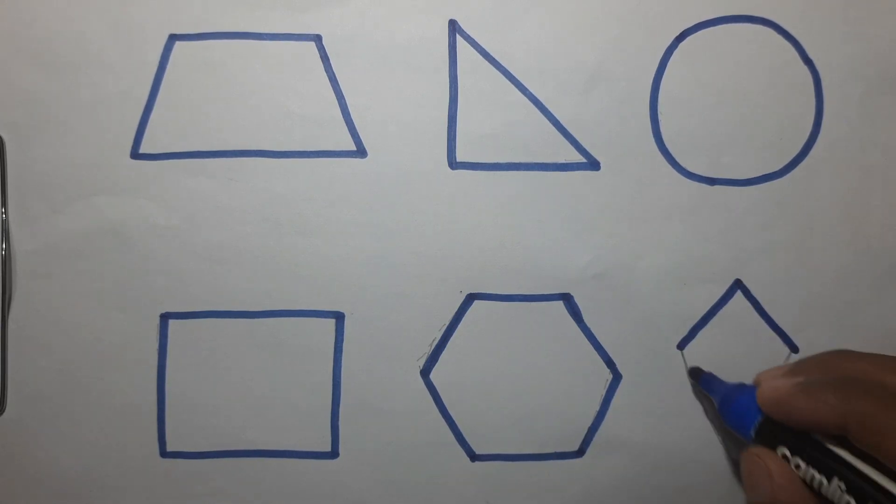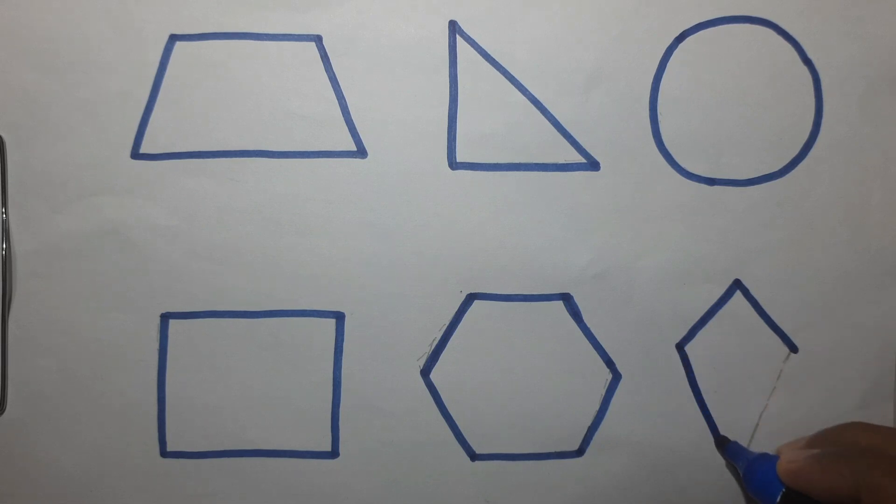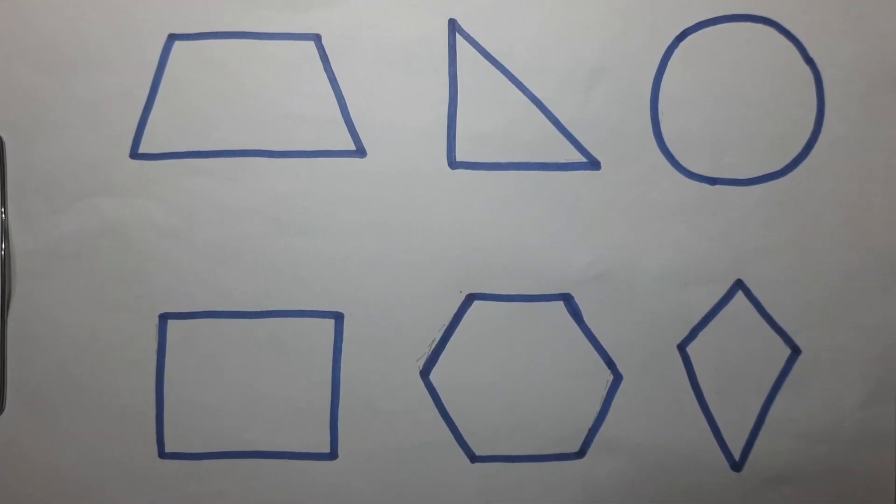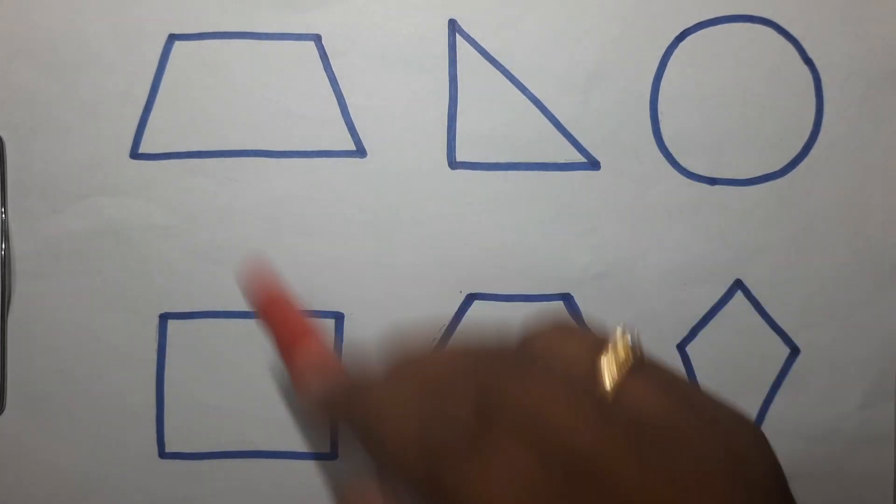Square. And the last one is a rhombus. Now let's color these shapes.